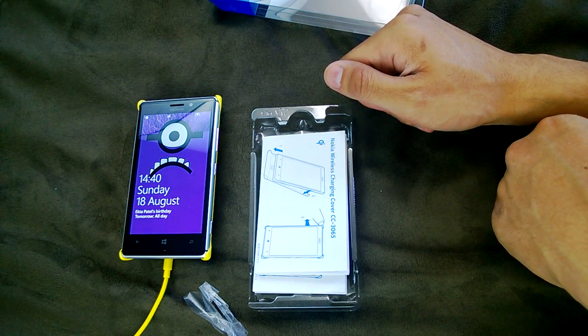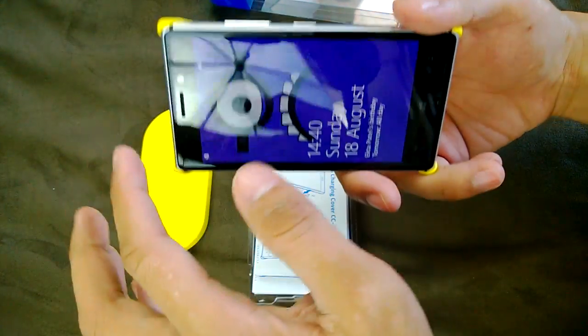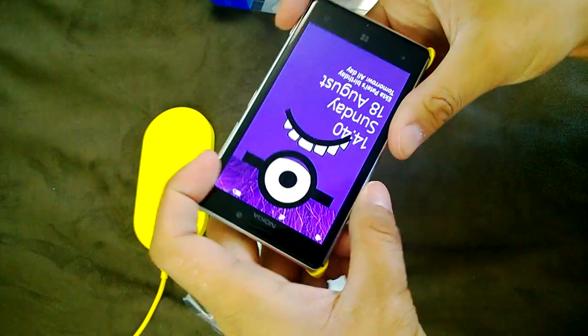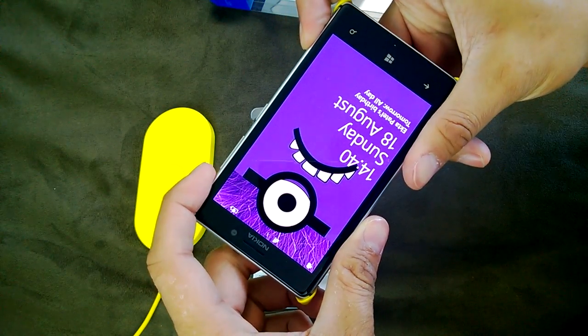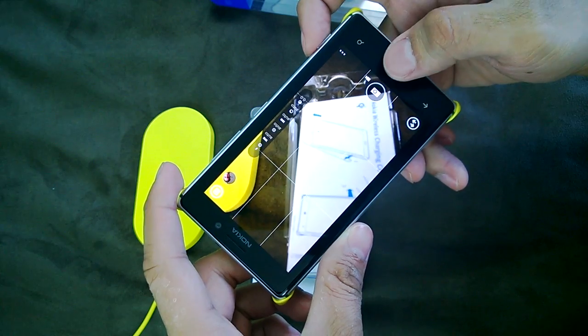Then that just charges, so none of the ports are obstructed because it just clips onto the corners. Still very easy to hold down and use the camera. You can see the 920 in the reflection filming this.